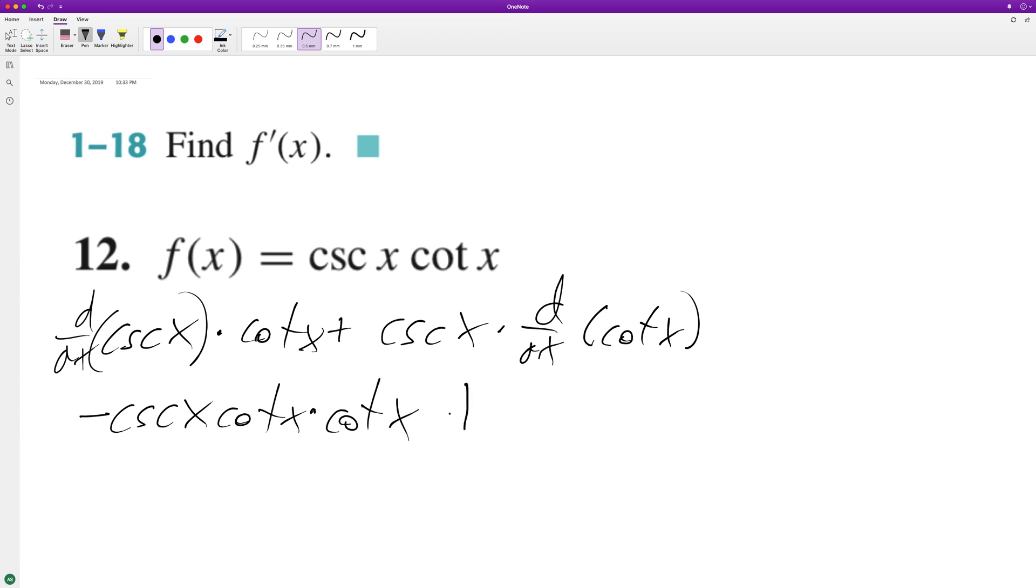Plus cosecant of x times the derivative of the cotangent of x is negative cosecant squared x.